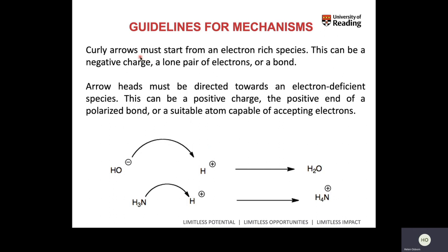For example, hydroxide (OH⁻) is high electron density, so the arrow goes from that through to H+, forming a new bond between oxygen and hydrogen to give water. In the ammonia example, the lone pair on nitrogen is the high electron density, so the arrow goes from there to H+, forming a bond so that nitrogen now has four hydrogens — giving NH₄⁺. We always want to balance both atoms and charge: in the first case the minus and plus neutralise to give a neutral product; in the second case the plus remains, so nitrogen carries a positive charge in the ammonium product.